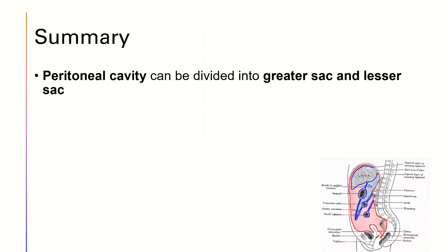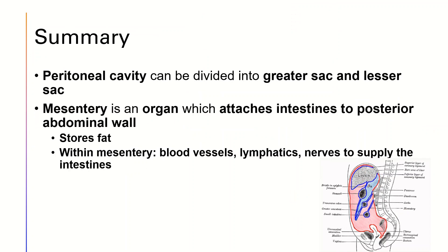So, in summary, the peritoneal cavity can be divided into the greater sac and lesser sac. And the mesentery is an organ which attaches the intestines to the posterior abdominal wall. It stores fat and within it, there are blood vessels, lymphatics, and nerves to supply the intestines.